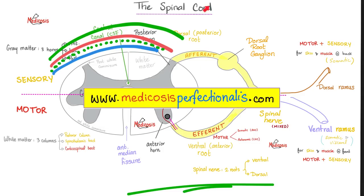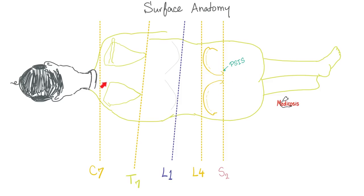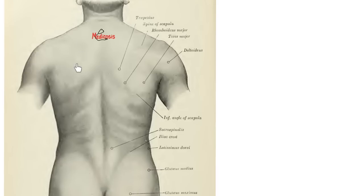Above the epidural space is the ligamentum flavum — 'flavum' literally means yellow, so this should be a yellow ligament. Then you have the interspinous ligament, supraspinous ligament, subcutaneous tissue, and the skin of the patient's back. The important landmarks: C7's spinous process is prominent at the back of your neck; the inferior angles of the scapula pass by T7; the lowermost rib cage is at L1; and the iliac crests are at L4, a very important landmark.